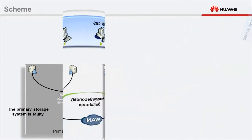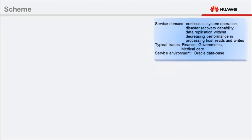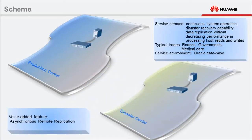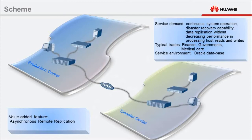The following introduces a typical remote disaster recovery network solution. Here is a deployment site that requires continuous system operation, disaster recovery capability, and in-service data replication. To meet these requirements, a production center and a disaster recovery center are deployed at two locations. Asynchronous remote replication is enabled between the two storage systems to achieve remote disaster recovery, which effectively prevents data loss caused by single points of failure.